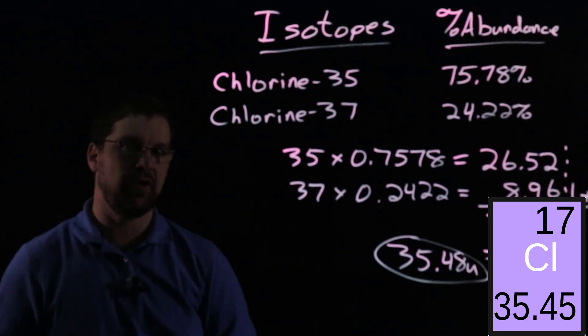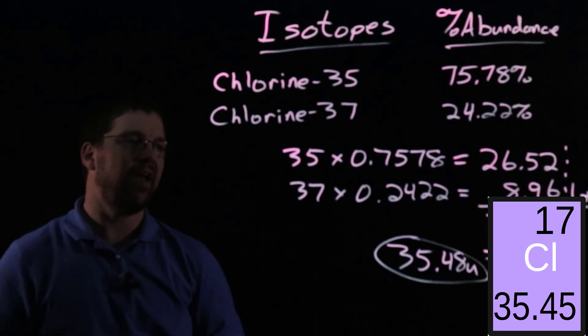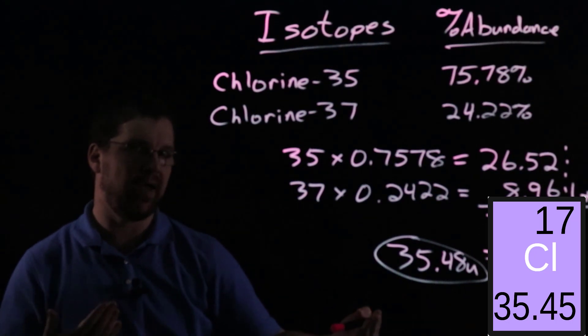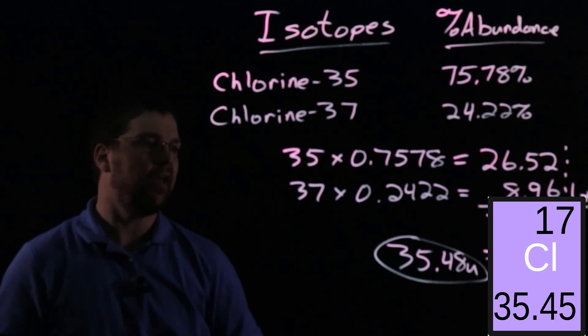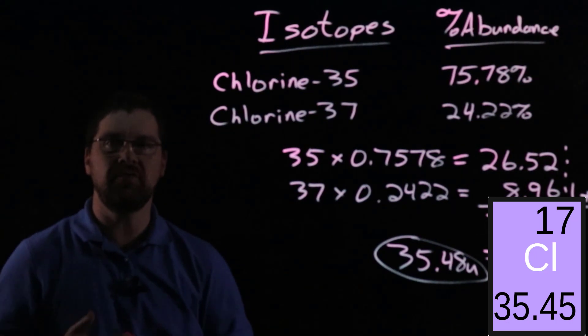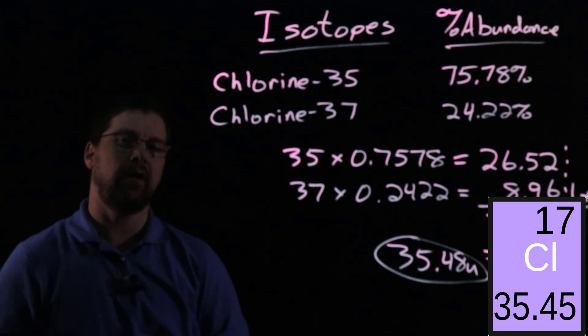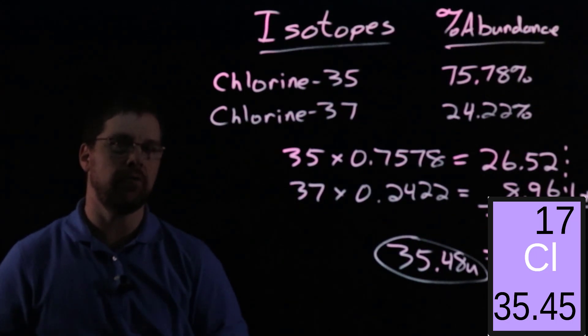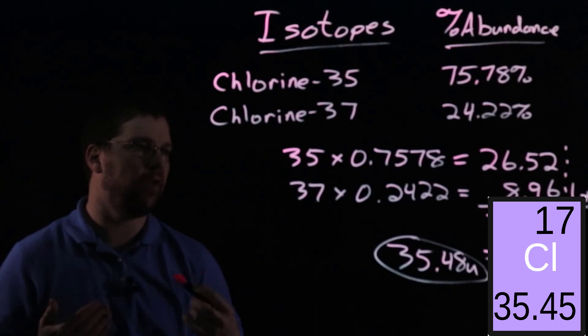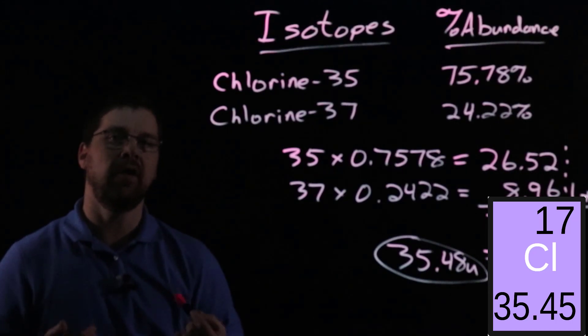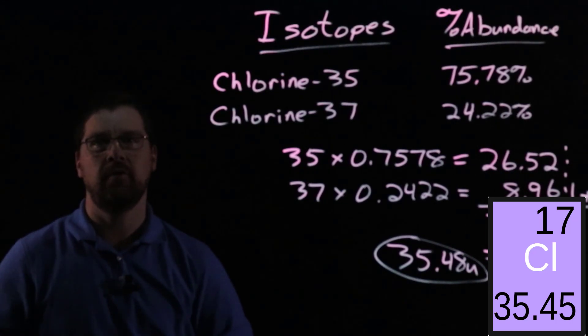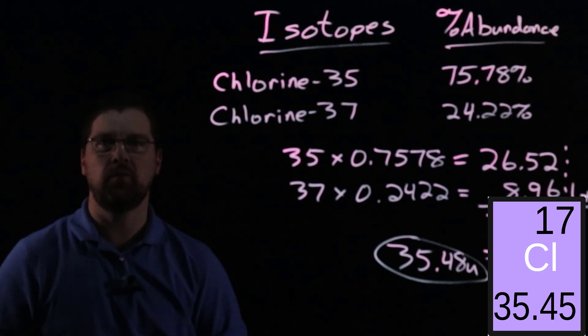to what's on the periodic table, and as long as the answer that you get when you are calculating the average atomic mass is reasonably close to what you find on the periodic table to the same number of decimal places, you can be reasonably well assured that you set things up properly and you did all of your math correctly to find the average atomic mass for an element and all its isotopes.